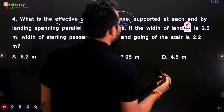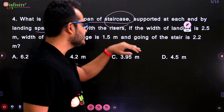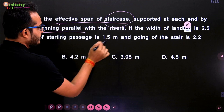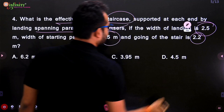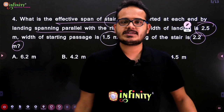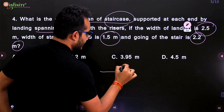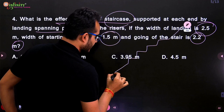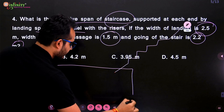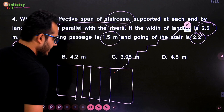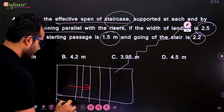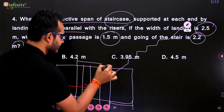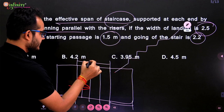Next question: What is the effective span of a staircase supported at each end by a landing, spanning parallel with the risers, if the width of landing is 2.5 m, width of starting passage is 1.5 m, and going of the stair is 2.2 m? In the plan of the staircase, the going (g) = 2.2 m, the landing width (y) = 2.5 m, and the starting passage (x) = 1.5 m.